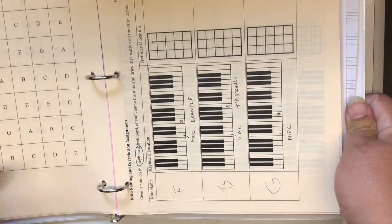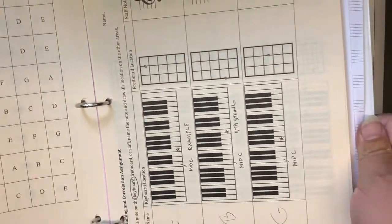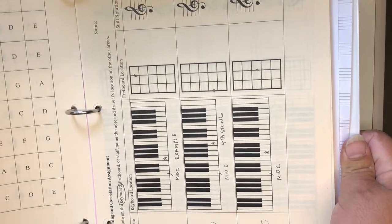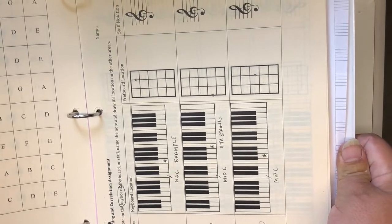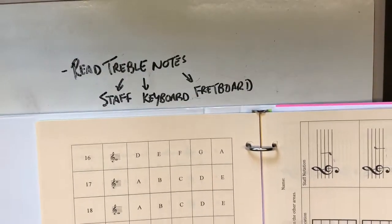And of course you label it. So expect quizzes that chop these things up and say, 'Can you find this note here or that note there? Or what is that note called between these three areas?'